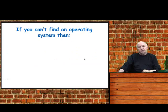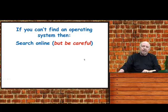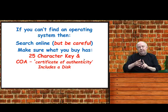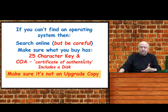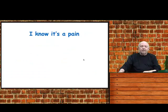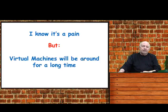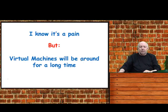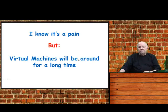If you can't find an operating system in your disks, you can search online, but you really have to be careful. You want to make sure that what you buy has a 25-character key — what's called a COA, a Certificate of Authenticity — and that it includes a disk. Make sure it's not an upgrade copy unless you have an older version than XP. It's really a pain going through all of this, but virtual machines are going to be around — you'll be able to run things like the Android operating system on them. Mac users have been using them for quite a while to run Windows programs, so virtual machines are here to stay.